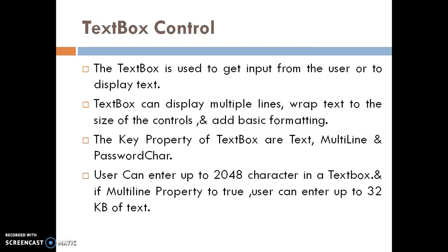Now, what is text box control? The text box control is used to get input from the user or to display text. It is the most common control of window form. A text box can display multiple lines, wrap text to the size of the control, and add basic formatting. The key properties of text box are text, multiline, and password char. A user can enter up to 2048 characters in a text box, and if we set the multiline property to true, the user can enter 32 KB of text.